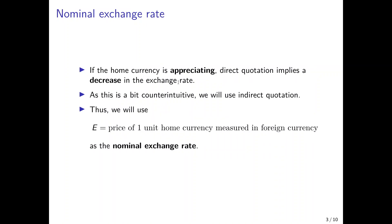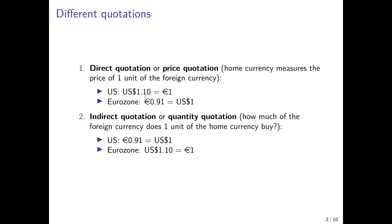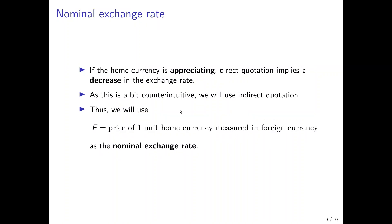When we talk about the nominal exchange rate — not yet adjusted for prices — the problem with the direct quotation is that if the home currency is appreciating, the direct quotation actually implies a decrease in the exchange rate. So if the US dollar appreciates, you have to pay less in dollars for one euro, meaning an appreciation corresponds to the exchange rate going down. Since this is counterintuitive, we will usually use the indirect quotation in our models, where the nominal exchange rate is the price of one unit of the home currency measured in the foreign currency.